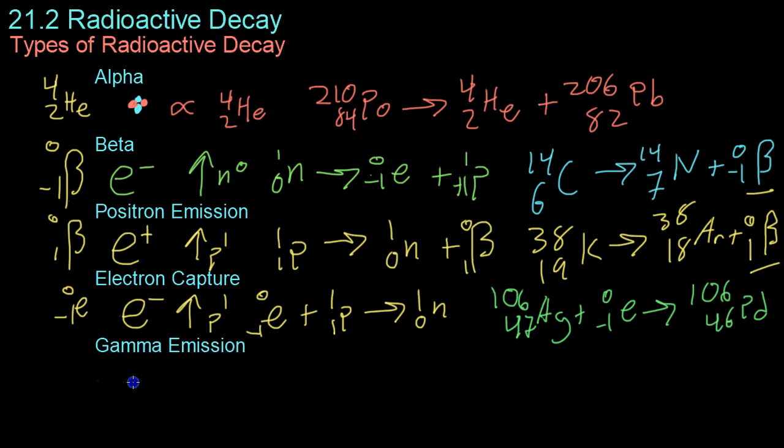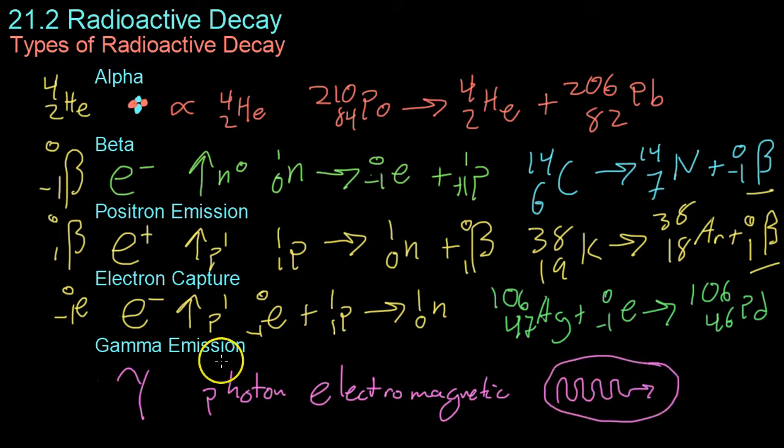Lastly, there are gamma rays, usually represented by the Greek symbol gamma. And these are not particles like alpha, beta, positron, and electron. Rather, they are a photon, or a particle of electromagnetic radiation. And these are some of the highest energy, highest frequency photons in existence. Gamma emissions are often the result of a nucleus dropping energy level due to decay from one of these other factors.